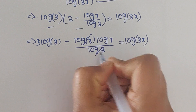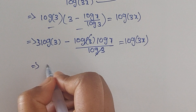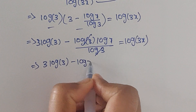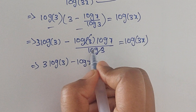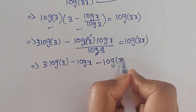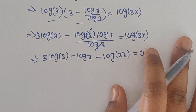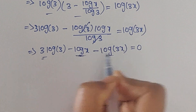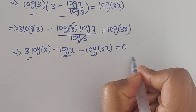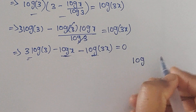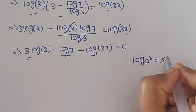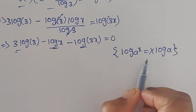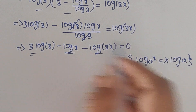See here — log 3 and log 3 get cancelled. So we get 3 log 3 minus log x. Move this term to the left side; it will become minus log 3x, equal to 0. Now in these three terms we can apply the formula: log a to the power of x equals x log a.